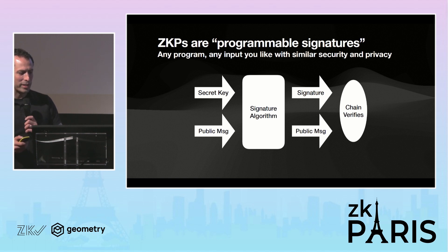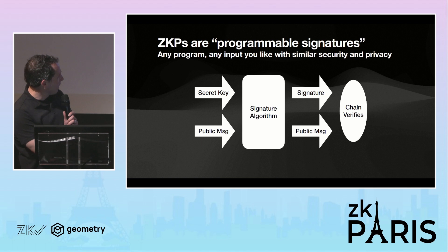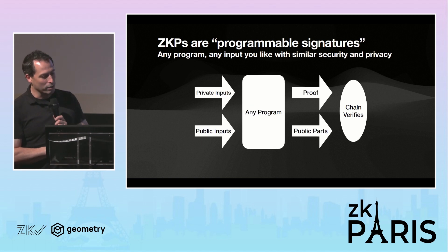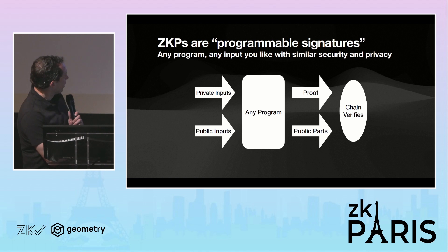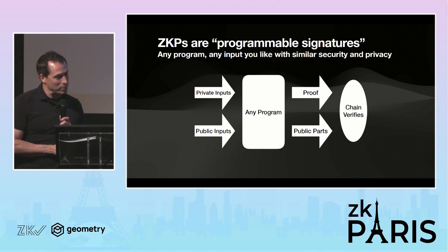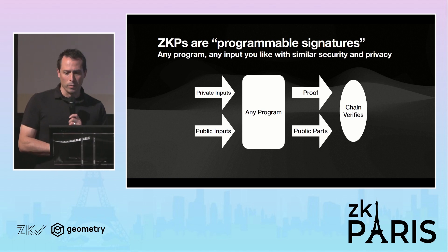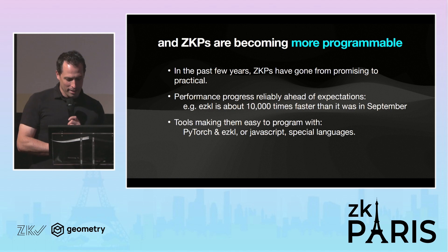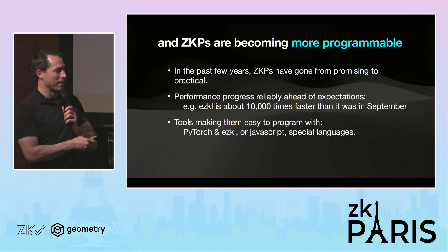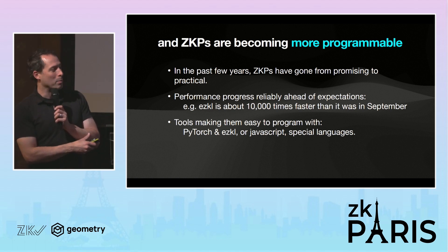Zero-knowledge proofs are programmable signatures. They let us take a secret input, a public message, run a public signature algorithm — that's the usual way — and get a signature that can be publicly verified. In a zero-knowledge proof, we can replace the private key with arbitrary private inputs, the public key with arbitrary public inputs, and run any program we like. The program I like is machine learning programs. People talk about ZKPs as probabilistically checkable programs, which sounds bad, but the probability of failure is like guessing Satoshi's keys, so it doesn't sound as bad anymore.